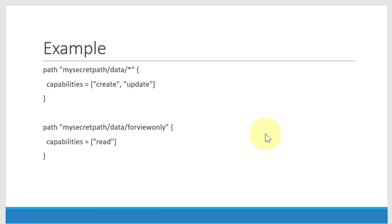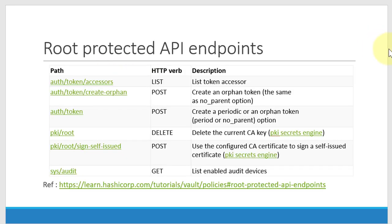Here is a quick example of how a policy would look. I am creating a path my-secret/data/*, meaning everything within the my-secret data path will have create and update permissions. And within my-secret/data/view-only, it will explicitly have read-only permission. Remember, when working with data we append 'data' against the secret engine path, and when working with metadata it will be 'metadata'. Within HashiCorp Vault, there are some API endpoints that can be accessed only with root privileges. These API endpoints handle tokens, authentication details, certificate signing, and audit, and accessing them requires root privileges.